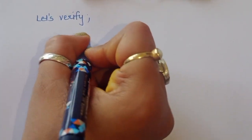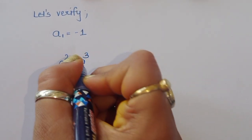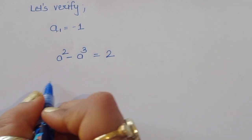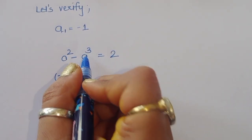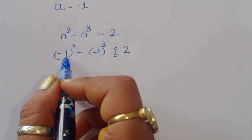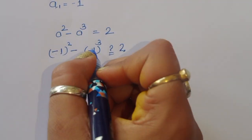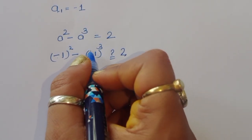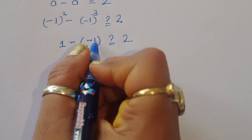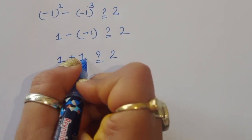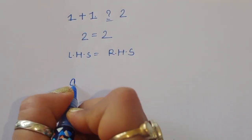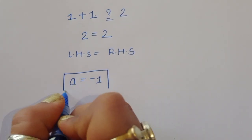Let's verify a₁ equals minus 1 in the original equation a squared minus a cubed equals 2. Substituting: (minus 1) squared minus (minus 1) cubed equals 1 minus (minus 1) equals 1 plus 1 equals 2. Since LHS equals RHS, the value a equals minus 1 is correct.